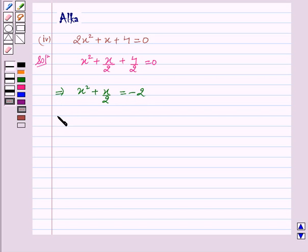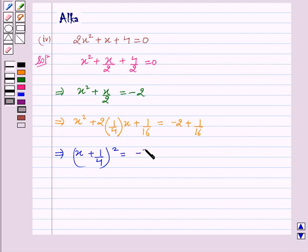This implies x² + 2 × (1/4)x + 1/16 = -2 + 1/16. This implies (x + 1/4)² = (-32 + 1)/16.